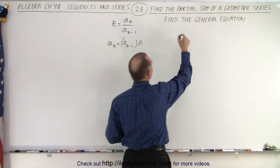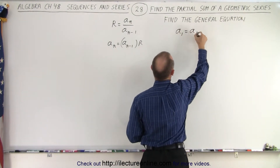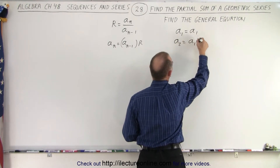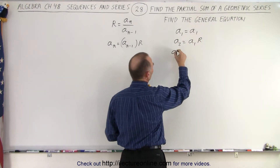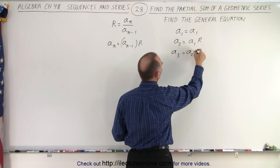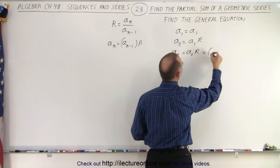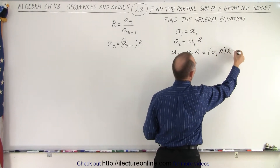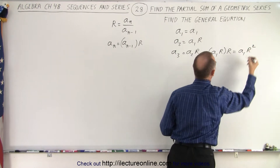This means that a sub 1 equals a sub 1, but a sub 2 is equal to a sub 1 times the common ratio R. And a sub 3 is equal to a sub 2 times the common ratio R. And since a sub 2 equals a sub 1 times R, a sub 3 is equal to a sub 1 times R squared.